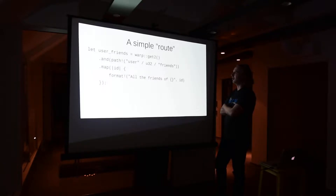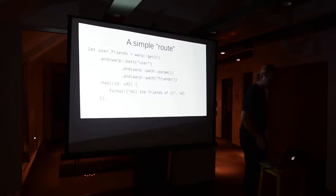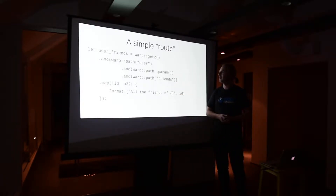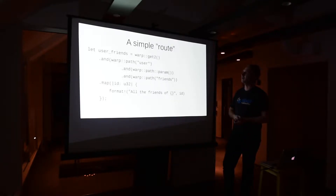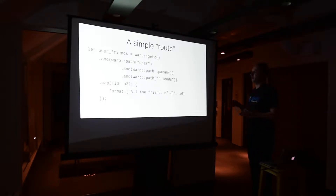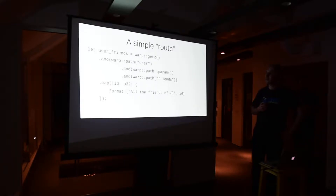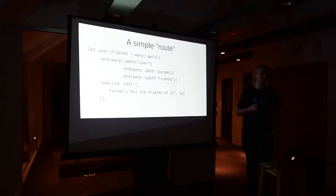Then we combine that filter with the path filter, which requires the first fragment of the path to be the string 'user'. Then we specify that we expect an integer, and then another static string. This is macro magic for yet more filters. When we introduce a parameter filter, we extract some data from the request and put it into the request context — which is pretty much a tuple that you can add things onto.